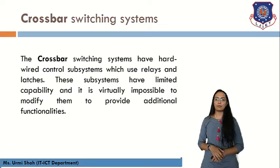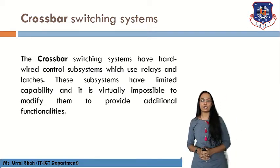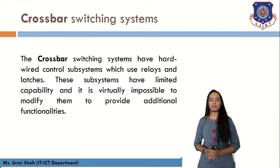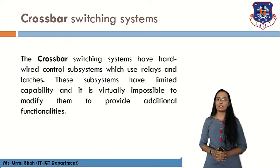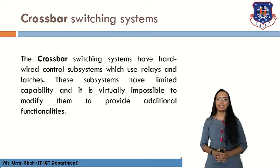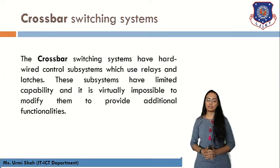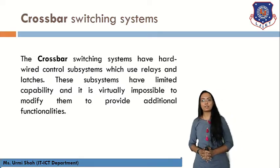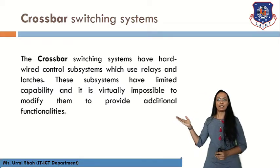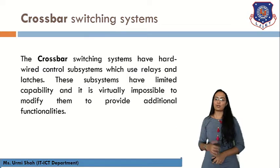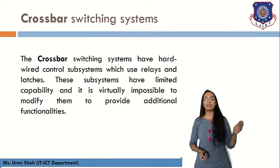The second type is the crossbar switching system. Crossbar switching systems have hardwired control subsystems that use relays and latches. These subsystems have limited capability and it is virtually impossible to modify them to provide additional functionality. So the two types of electromechanical switching systems are Strowger and crossbar.